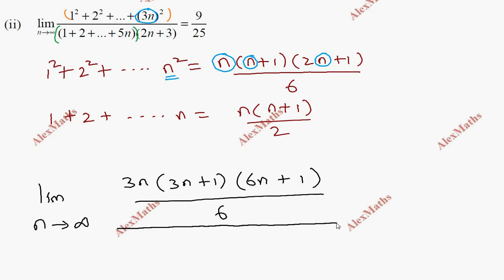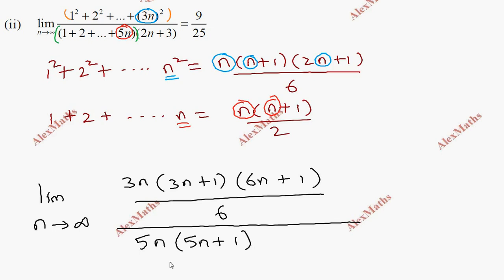The denominator function will be 5n. So the function of the model is 5n(5n+1) / 2.